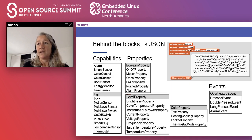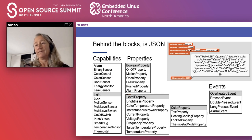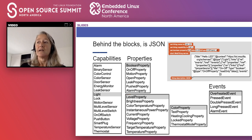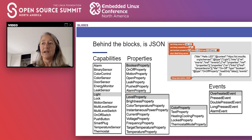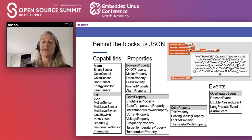Behind MicroBlocks there are actually opcodes and other information. The thing description in JSON becomes a long string that describes the properties, actions, and events of the thing I make.